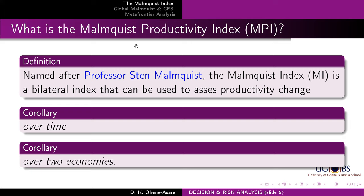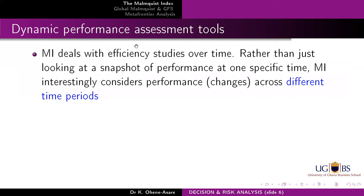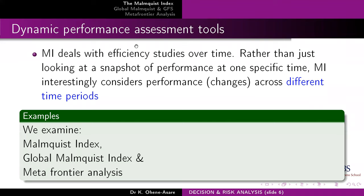You can use it to assess productivity change over time and across two countries, or across two entities — not just across time, but across individuals. In terms of regression, we talk about cross-sectional regression and then panel data regression. This is like panel data regression analysis. If you're looking at dynamic performance, it deals with efficiency studies over time. Normal efficiency will look at snapshots of performance at a point in time, but the Malmquist Productivity Index considers performance dynamics across different time periods.